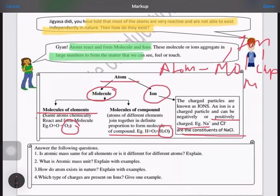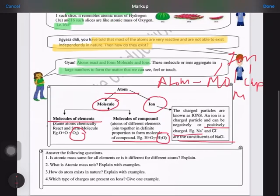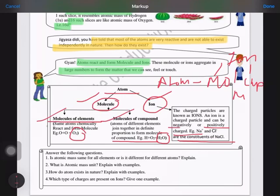Charged particles are known as ions, and these ions can be positively or negatively charged and they form a compound. This must be clear: atoms can exist in molecules and ion forms, molecules can be in two forms—elemental form or compound form.